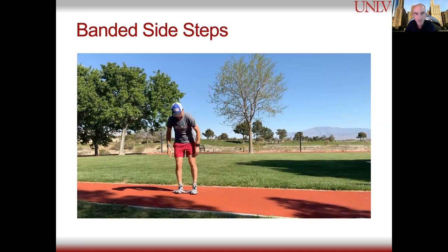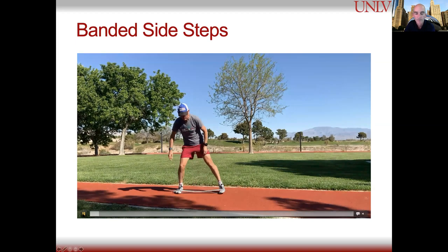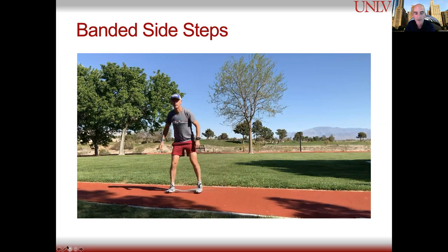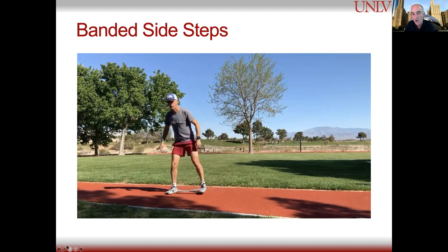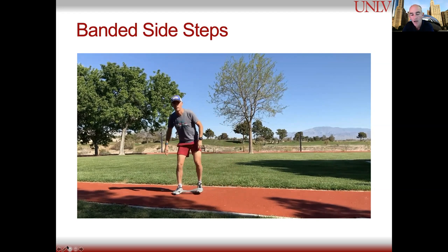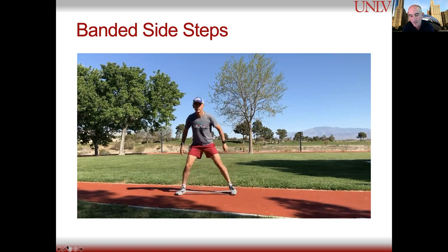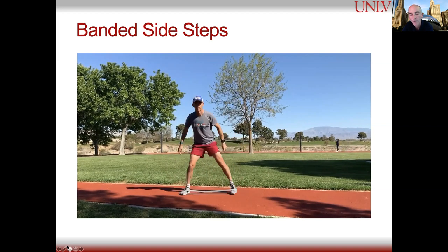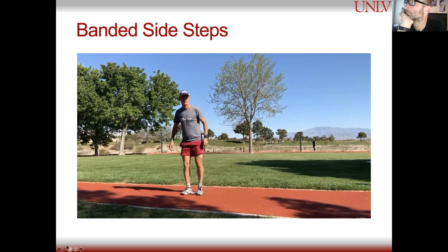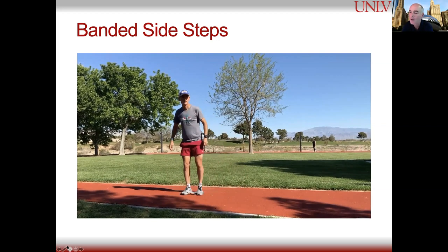The banded sidestep — the band is around my toes and I just go back and forth. This is similar to the speed skater but works a little differently. It's around my toes because the gluteus maximus is an external hip rotator, so this is going to stimulate it even more. If you put it around your knees or even your ankles, you don't get quite the same glute activation.